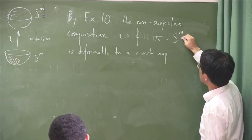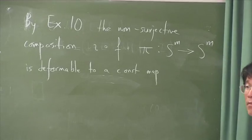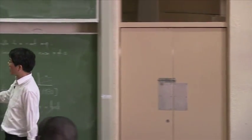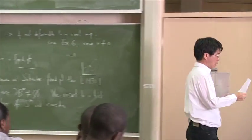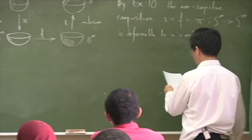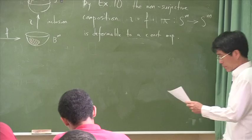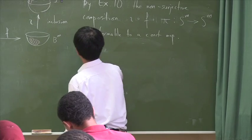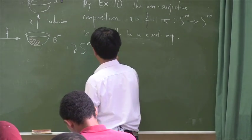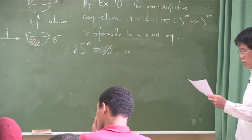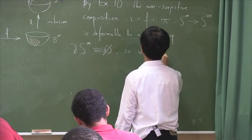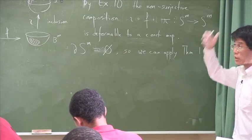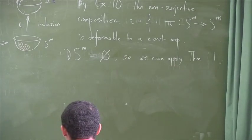Now we are talking. S^m is closed without boundary, whereas the original problem, B^m was not closed, it had boundary. Boundary is bad for intersection theory. We can then apply the theorem. So S^m is closed. Or rather, let's write it like this: the boundary of S^m is empty, so it's a closed manifold, so we can apply theorem 11 that we've just approved. We can apply the Lefschetz ideology, Lefschetz results, and find a fixed point.